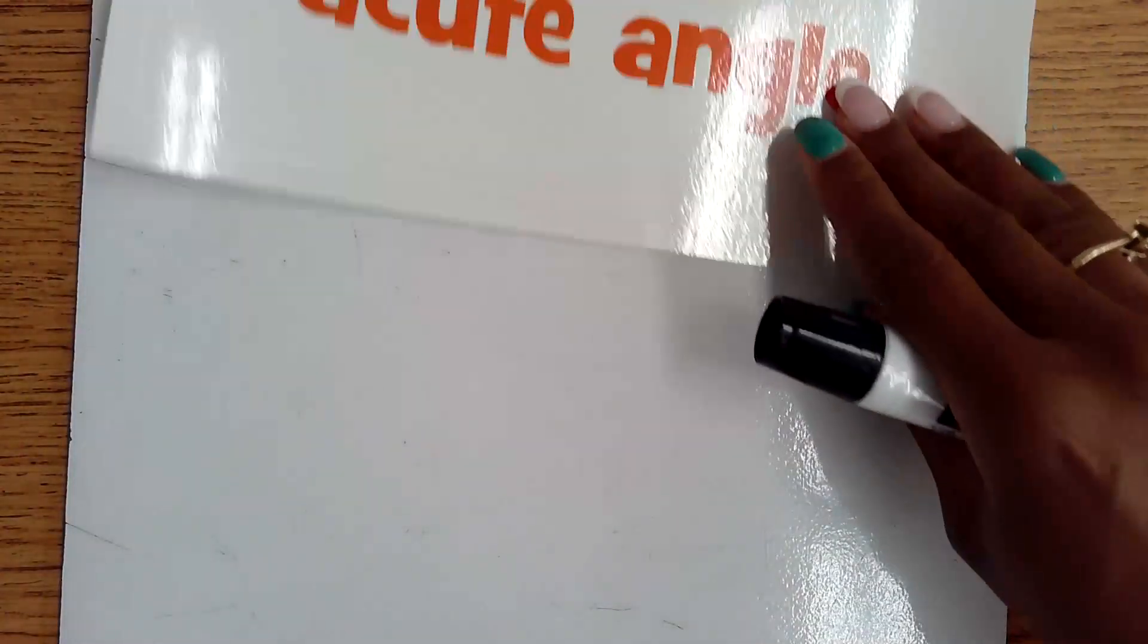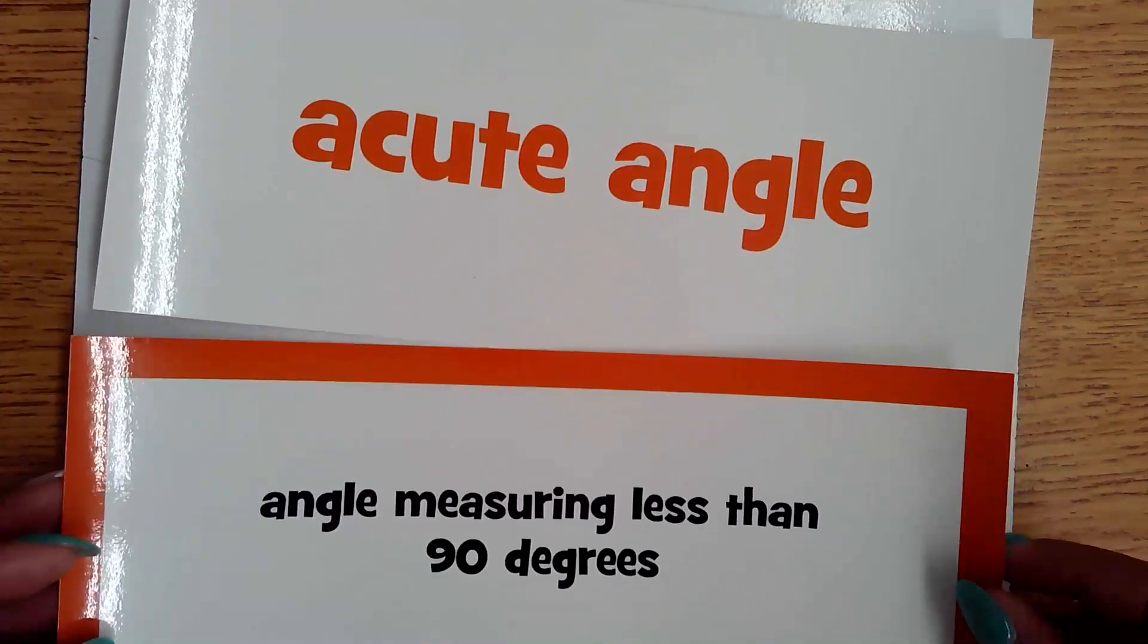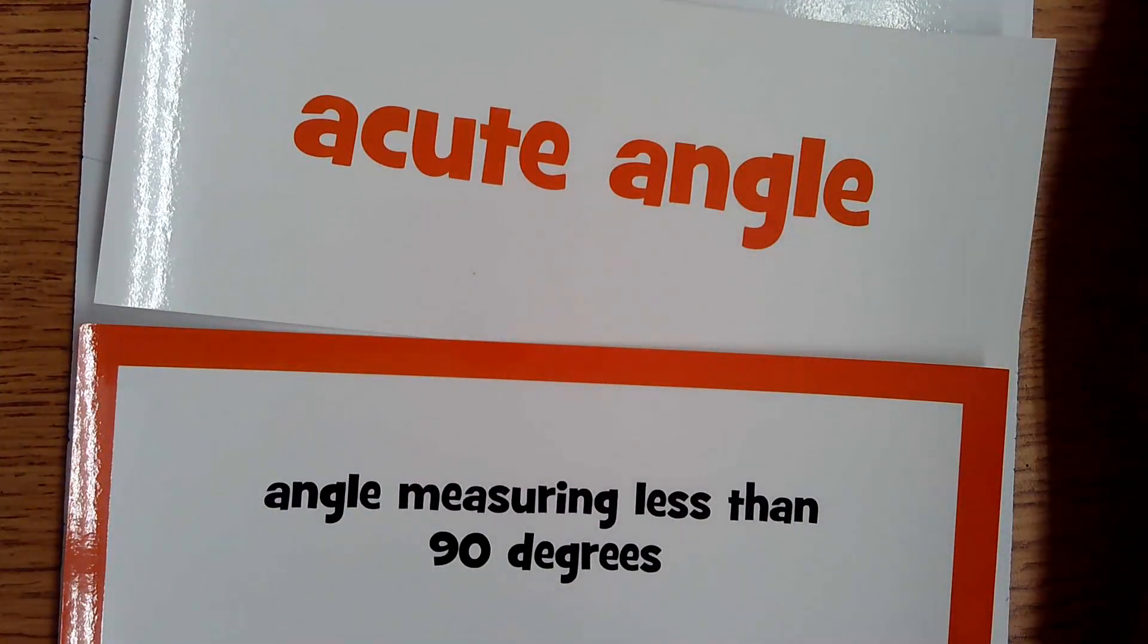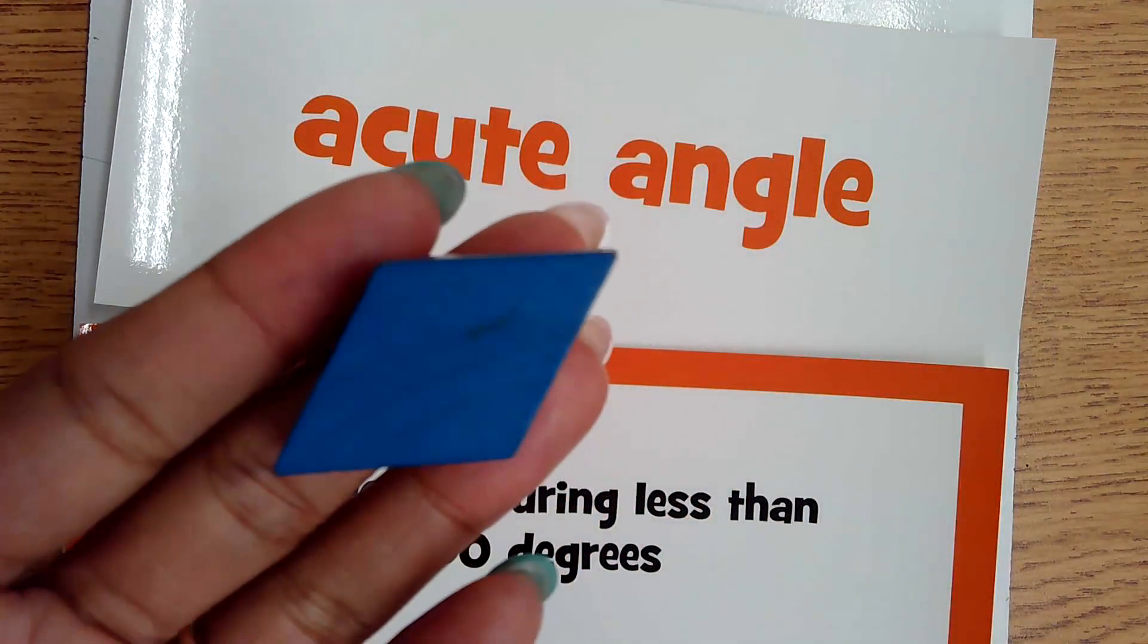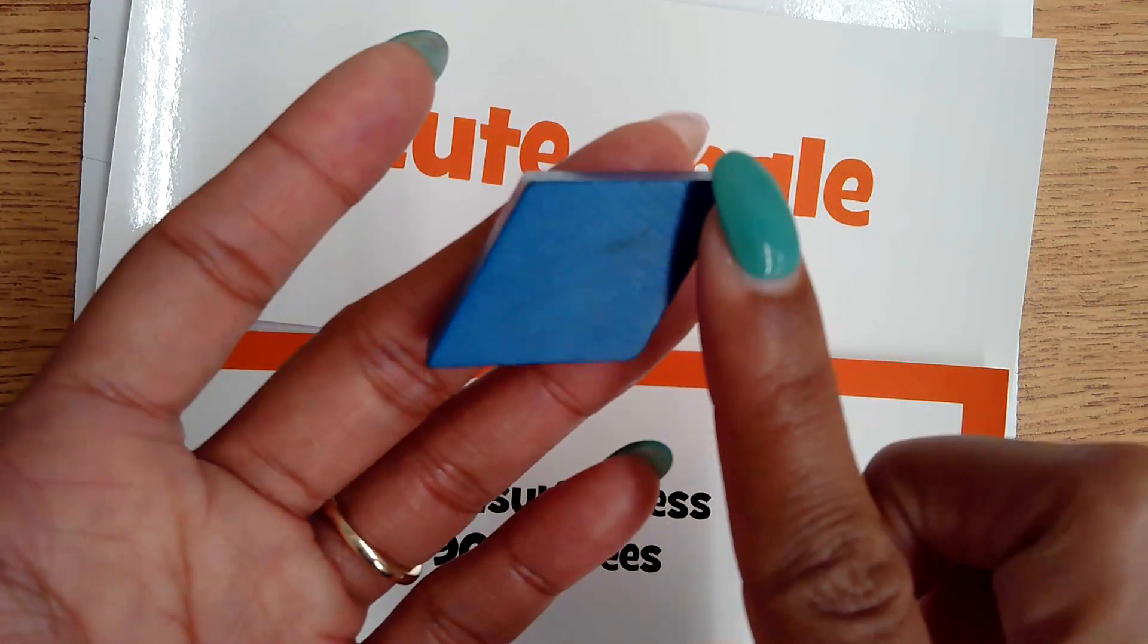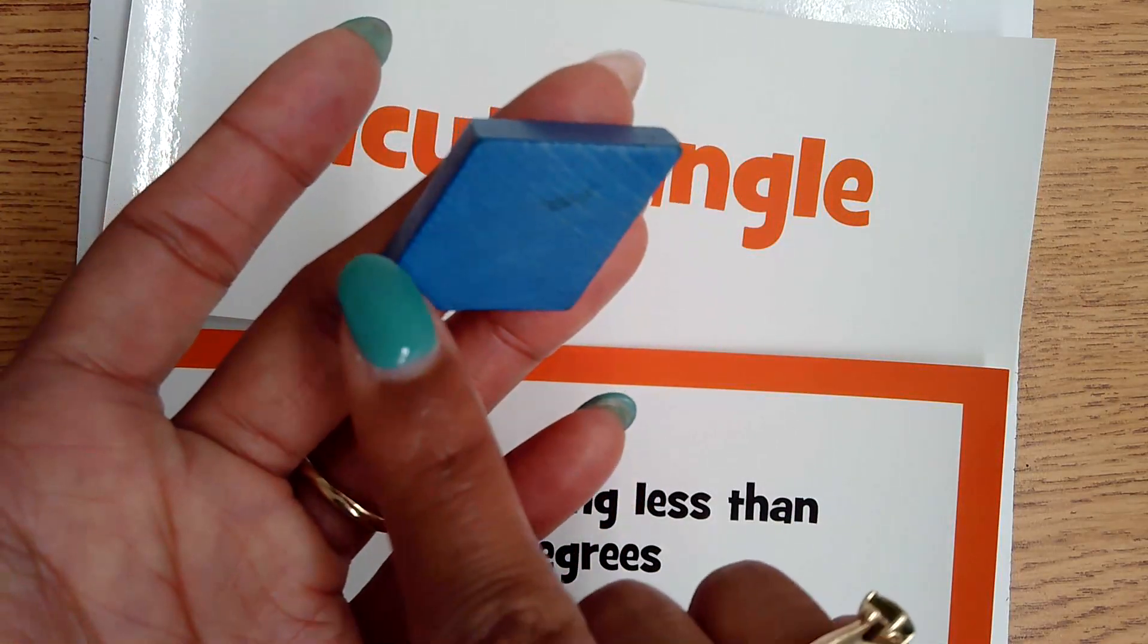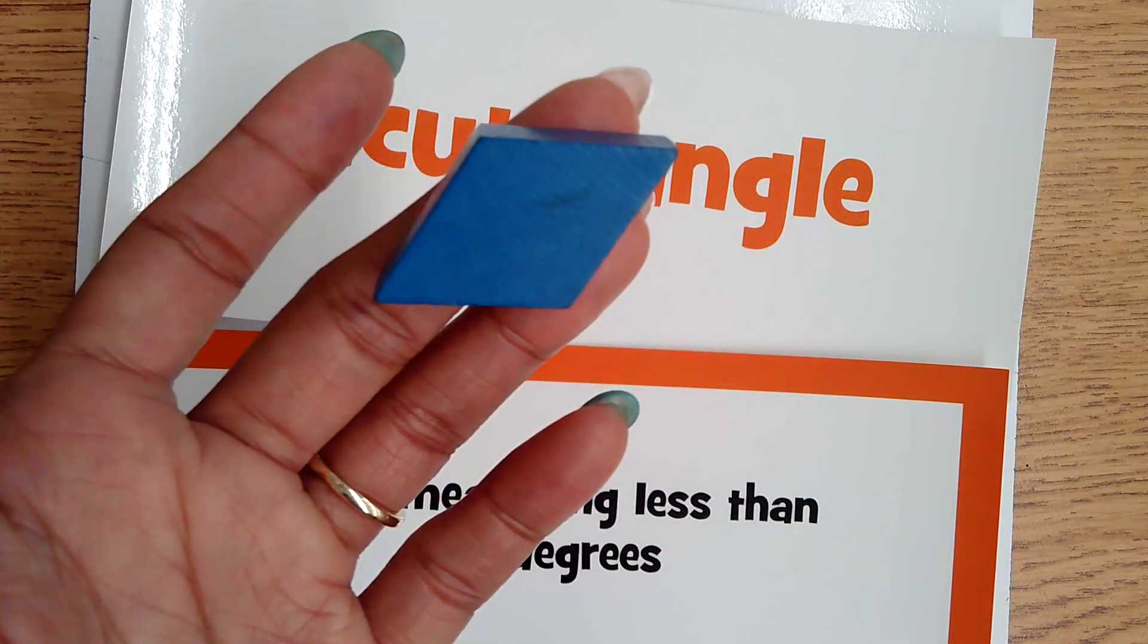Students will also take angles, and they will talk about three different types. We have acute angles. Acute angles are any angles that measure less than 90 degrees. If I look at our parallelogram, these two opposite angles are acute because they are less than that corner, that 90 degree measurement.